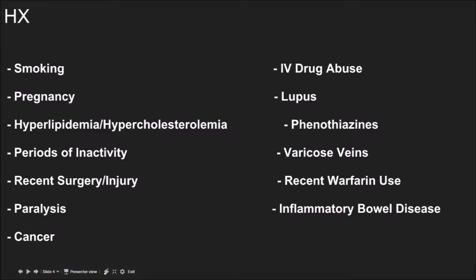So usually the history you see with these people is going to be pregnancy, smoking, high cholesterol — hyperlipidemia, high levels of fat and cholesterol in the blood — long periods of inactivity, recent surgery. Paralysis is a huge one; think of how seldom those people move their lower extremities. Cancer, IV drug abuse, lupus, phenothiazines, and varicose veins are also major predisposing factors. Recent Coumadin use matters too, because of a yo-yo effect on clotting factors. Inflammatory bowel disease can also play a role.